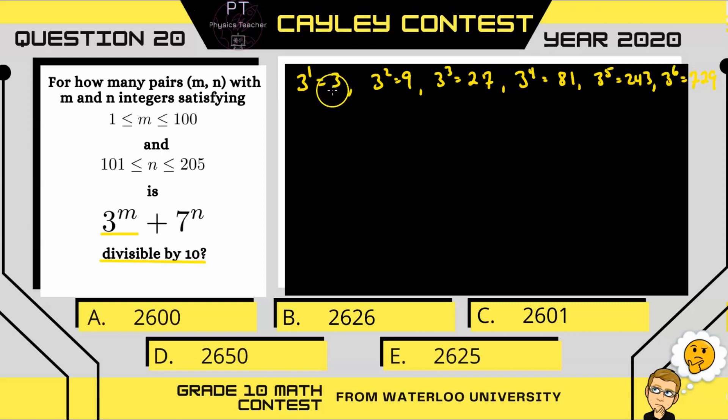There's definitely a pattern, right? We have 3, 9, 7, 1, 3, 9, and if you were to continue, this pattern would continue of 3, 9, 7, 1, 3, 9, 7, 1, and so on.